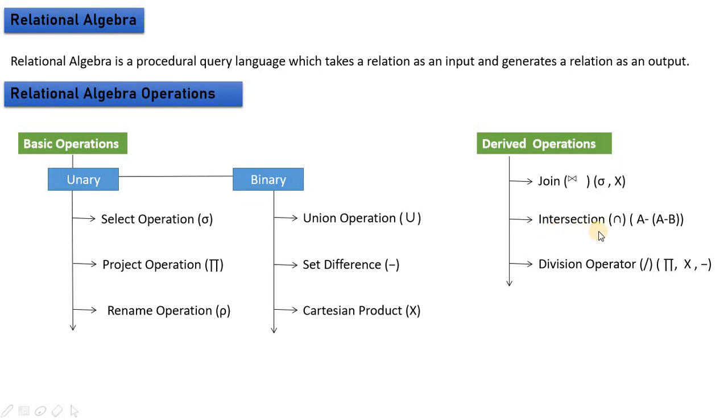Second is intersection, which is what is common. Then there's set difference, like A minus B. Next is division operation - division is the combination of projection, cross product, and set difference.